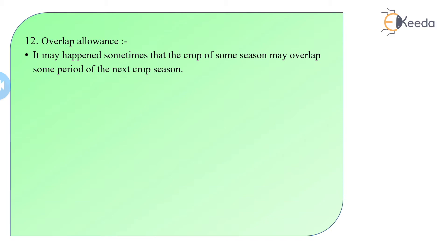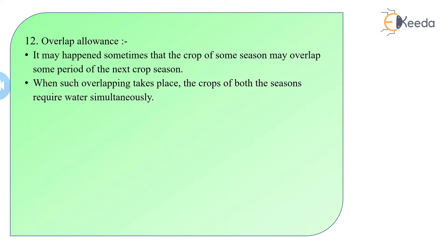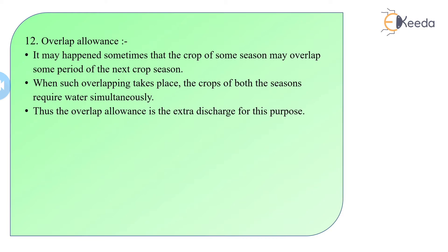Overlap allowance: sometimes the crop of one season may overlap into the next crop season. For example, Kharif crops are sown in June and harvested in October. Perennial crops also require water in October, since they need water throughout the year. When such overlapping takes place, crops of both seasons require water simultaneously. The overlap allowance is the extra discharge required to support production of the overlapping season's crop as well.